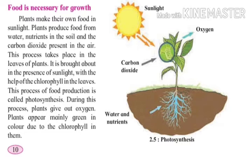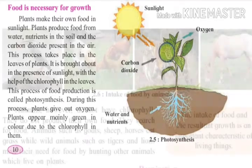During this process, plants give out oxygen. Yaya photosynthesis prakriya madhe vanaspati oxygen vayu bahar sodtat. Plants are mainly green in color due to the chlorophyll in them. Vanaspati madhe hari dhravya asti, aani yaya hari dhravya mudez vanaspati pramukhyane hiruvya rangachi aapliya la dhistat.